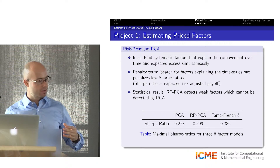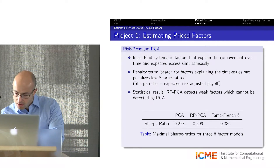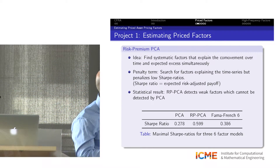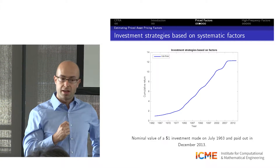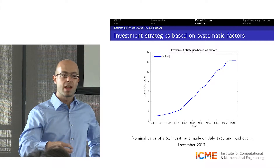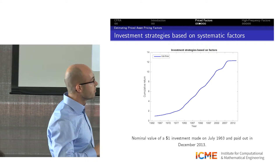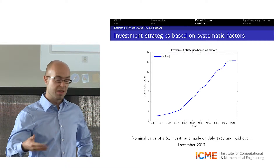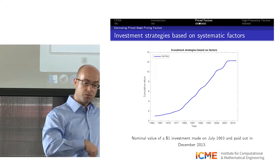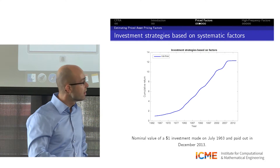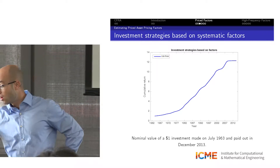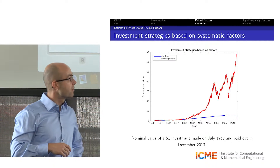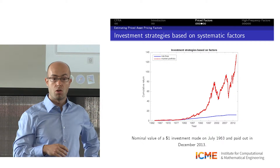To give better intuition, consider an investment strategy using these factors. If in July 1963 you invest one dollar in government bonds — a risk-free investment — after every month you reinvest your dollar and interest earned. After 50 years, you've earned $12. You can do better by buying a market index: investing in the S&P 500 index, after 50 years you would have around $130.